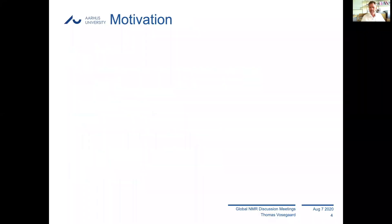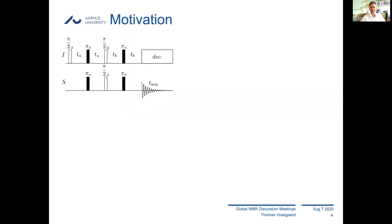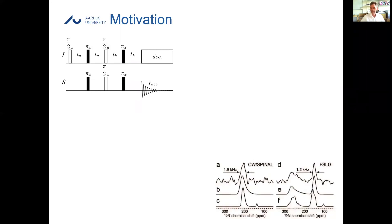My motivation for working with numerical simulations is that every day you work with complex pulse sequences, and we work with spectra that may sometimes have a surprising appearance. In this case, on the right-hand side, I expected nice regular symmetric doublets in the FSLG decoupled spectra, but I definitely did not see that.